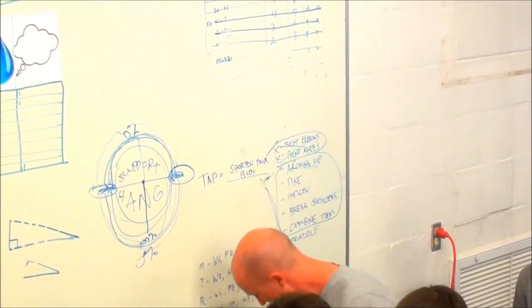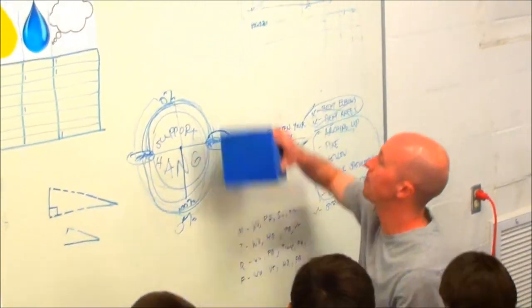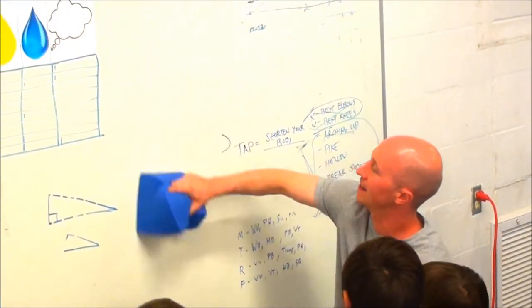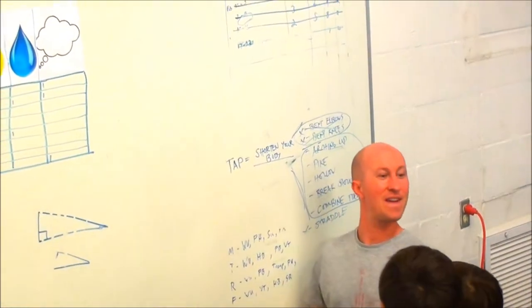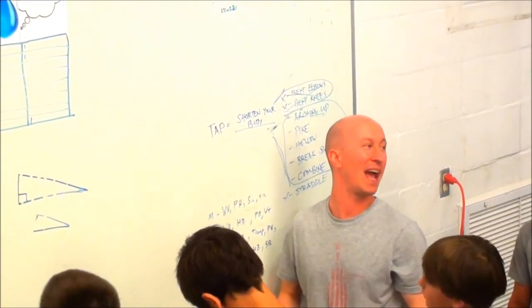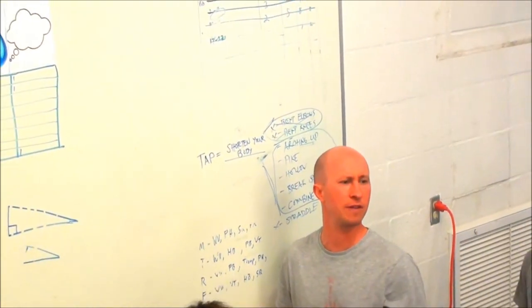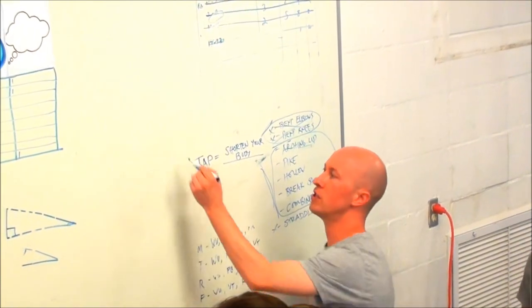When you get in the hang, what happens? What do you do? Pull down, pull down. You pull down. And why is that cool? What does that do? What does it do when a bar goes from this position and it goes to this position? What is it always gonna do?